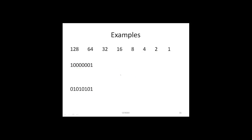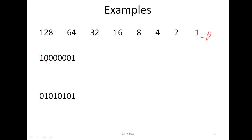Now let us look at another number. The positional chart is already drawn out. We know that the most significant bit position is 128, everything else is 0 except that position 0 is 1. Therefore, this binary number is equivalent to decimal 129.